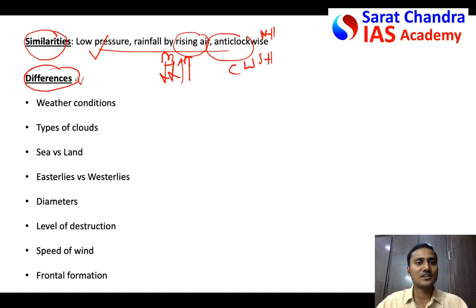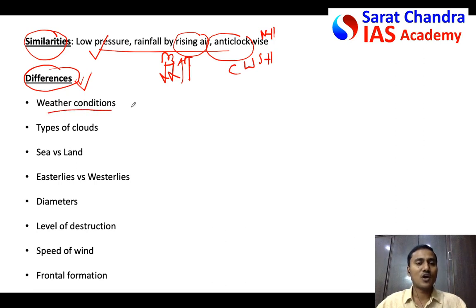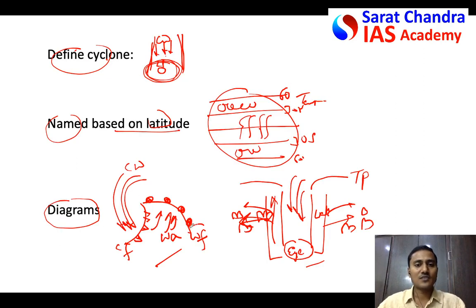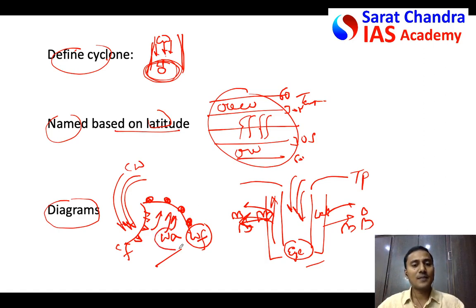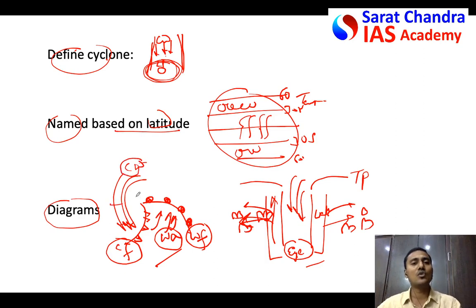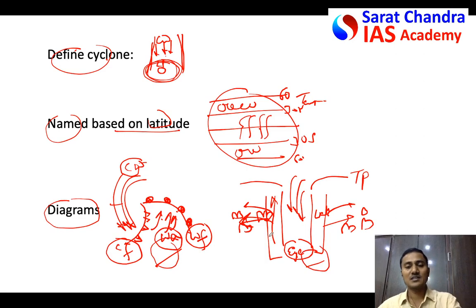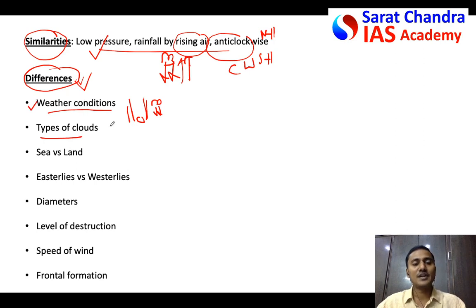The major part is the differences — most marks come from the number of points in differences. First difference: weather conditions. In tropical cyclones there are cumulonimbus clouds and heavy rainfall — only one type of climate. In temperate cyclones, when the warm front approaches there are cirrus clouds with light rainfall over a large area; when cold front approaches there are cumulonimbus clouds with heavy rainfall in a small area for a short period. So four different weather conditions occur in temperate cyclones versus one in tropical cyclones.